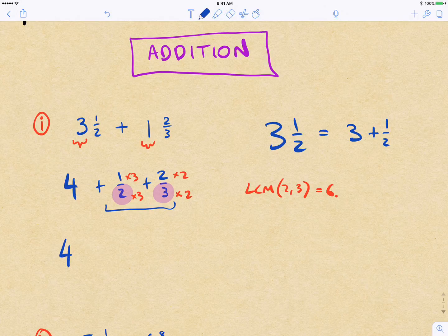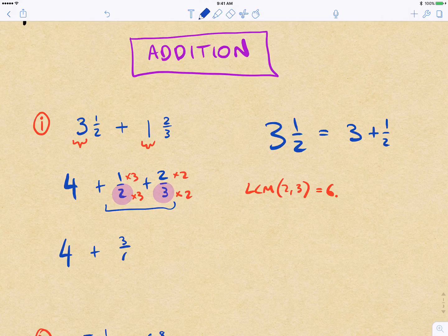So we've still got our 4 that's sitting out here. And then our equivalent fraction for a half is 3 sixths, and our equivalent fraction for 2 thirds is 4 sixths.